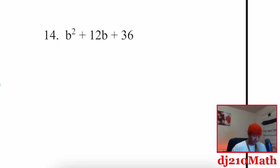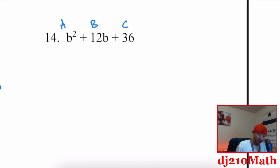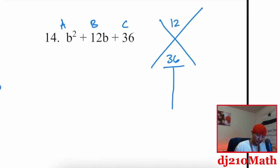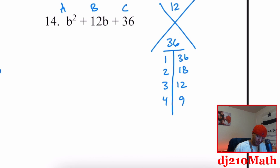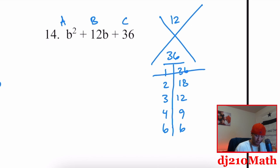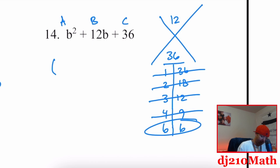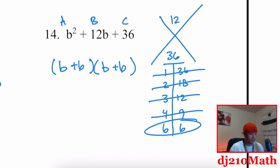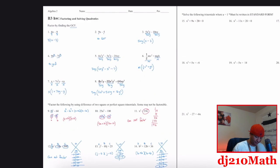Number 14: A times C is 1 times 36 equals 36, and we want factor pairs that add up to 12. Checking: 1 and 36 — no; 2 and 18 — no; 3 and 12 — no; 4 and 9 — no; 6 and 6 — yes! So the factors are B plus 6 times B plus 6.